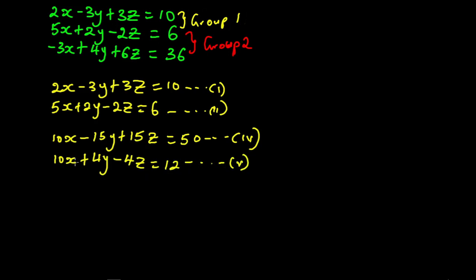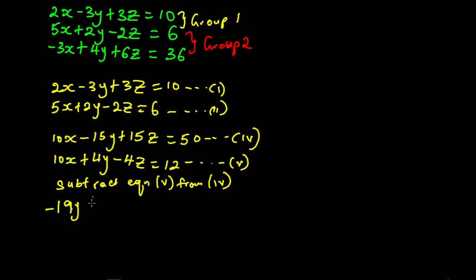Next we subtract equation 5 from equation 4. 10x minus 10x gives 0, so x is eliminated. Minus 15y minus 4y gives minus 19y. 15z minus minus 4z gives plus 19z. And 50 minus 12 gives 38. So we have minus 19y plus 19z equal to 38. We call this equation star.